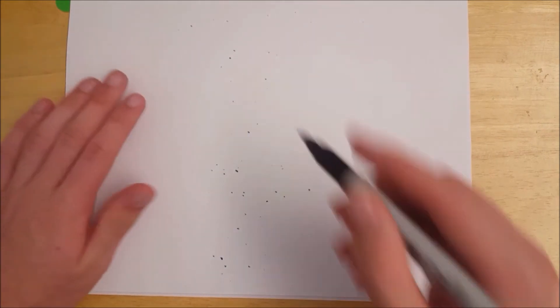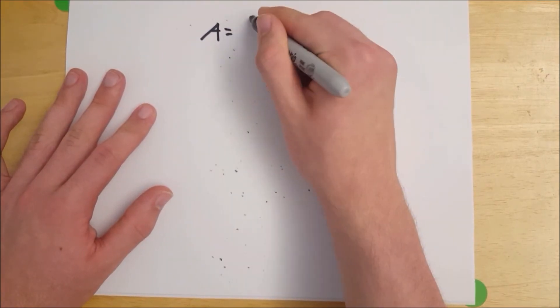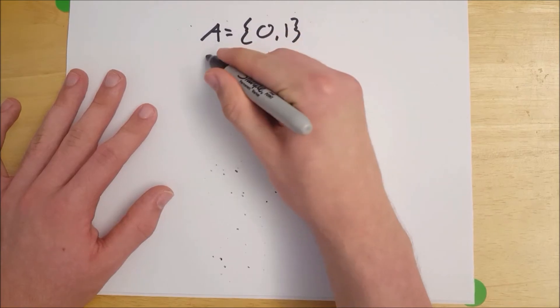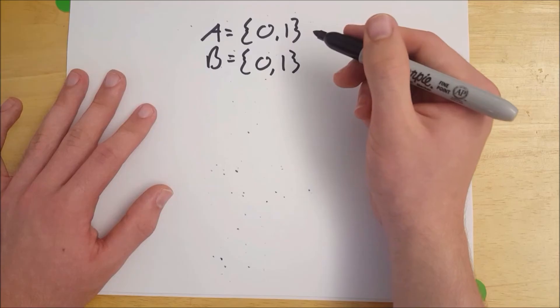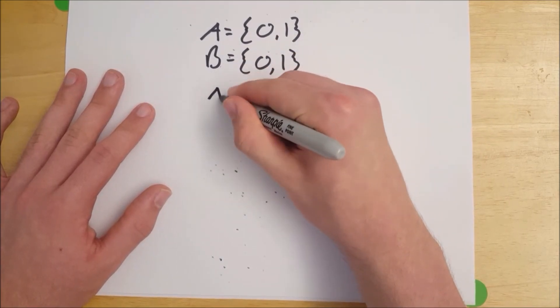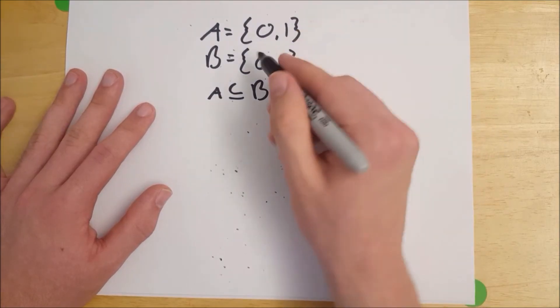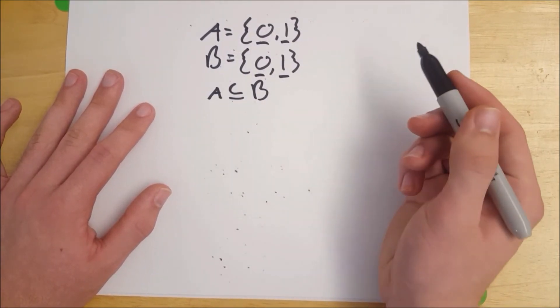And now let's take a look at the other possibility. Let's say that A is equal to the set 0, 1, and B is equal to the set 0, 1. Now we can still say that A is a subset of B because all of the elements in A are in B because of course they are equal.